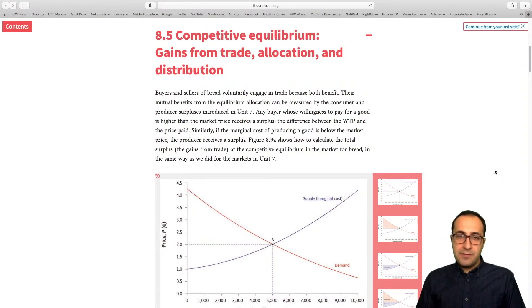Competitive equilibrium, gains from trade, allocation and distribution. As economists we always say competitive markets are efficient. But what do we mean by that? We mean that competitive markets maximize the mutual benefits for consumers and producers. Let me explain.